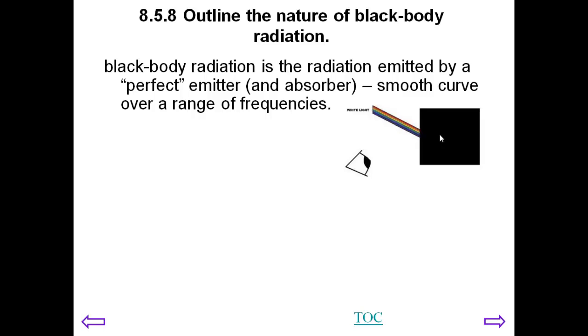So black body radiation is radiation emitted by a perfect emitter. And it will also be an absorber but we're interested in its ability as an emitter. And there's a characteristic smooth curve over a full range of frequencies which is called the black body radiation curve.